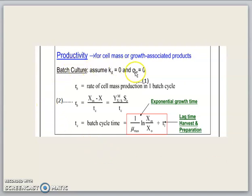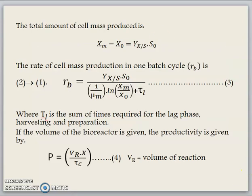From the equation here, I would like you to identify all those terms in this equation: what is X_m, what is S_0, what is X_0, in order for you to understand more on the equation. The total amount of cell mass produced can be identified from the equation X_m minus X_0 equals Y_X/S times S_0. And the rate of cell mass production in one batch culture, denoted by Rb, is given by equation 3 here.